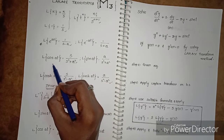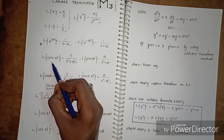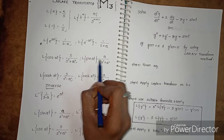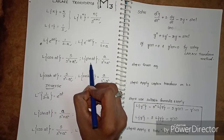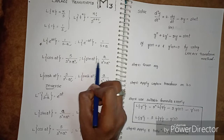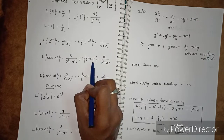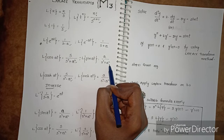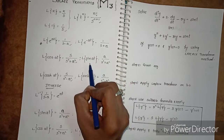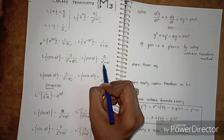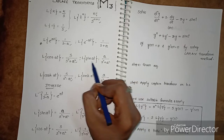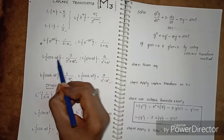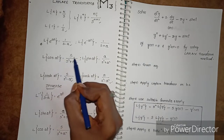Next: L of cos(at). Cos(at) gives s by s squared plus a squared — that is a function of s. L of sin(at) equals a by s squared plus a squared. L of cos(at) equals s by s squared plus a squared. L of sin(at) equals a by s squared plus a squared. L of cos(at) equals s by s squared plus a squared.